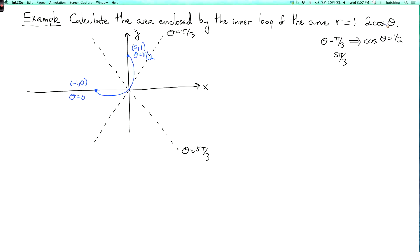And when theta goes up to pi, r goes all the way up to 3. So we're going to hit the point minus 3, 0 at theta equals pi.